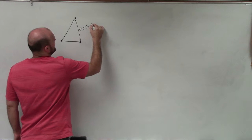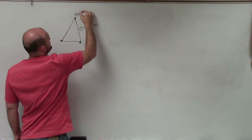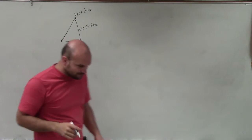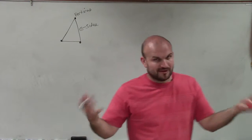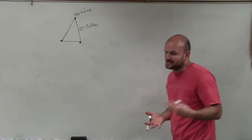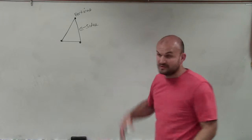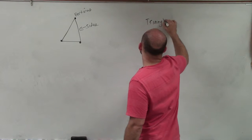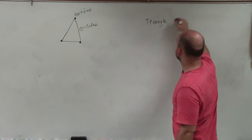So it has sides and vertices, or at least one of them would be a vertex. So what I want to do is go over how we classify them. Now, this one might be familiar to you. That's a triangle. Any polygon that has three sides we call a triangle.